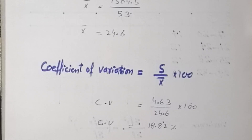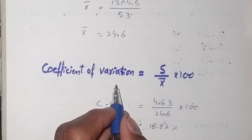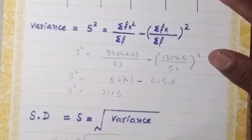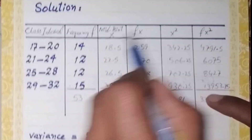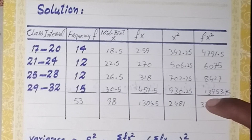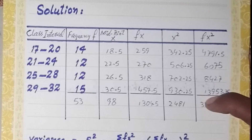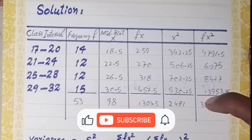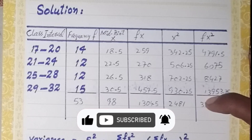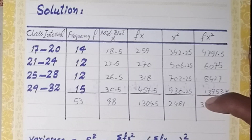Dear friends, we have calculated all values — the coefficient of variation, mean, standard deviation, and variance — for this grouped data in this lecture. If anyone has questions, you can ask through the comment section. Please like, share, subscribe, and press the bell icon for more updates. Thank you so much.